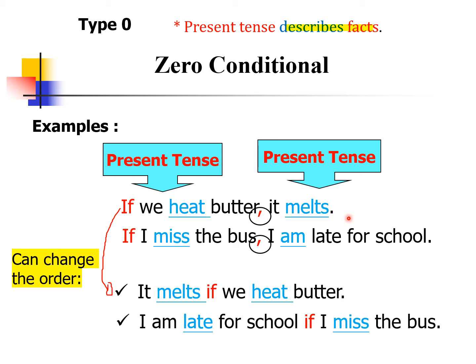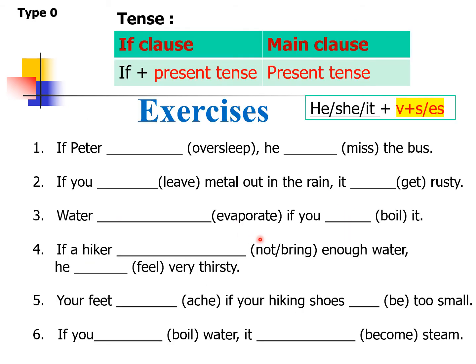We are going to do some exercises in the next slide. Are you ready? Here we go. Now comes the most important part of this video — doing exercises. Let's try to complete this exercise. Reminder: whenever you see he, she, it with the verb, you need to add s or es.